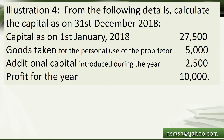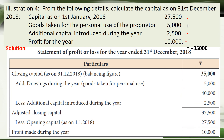Illustration 4: Calculate the capital as on 31st December 2018, which is the closing capital. Opening capital as on 1st January is given. The question includes goods taken for personal use (drawing in kind) of 5,000, additional capital introduced, and profit for the year. Applying the formula: opening capital is a minus, drawings (goods taken) are added, additional capital introduced is a minus, and profit for the year is a minus — the net total gives a closing capital of 35,000.